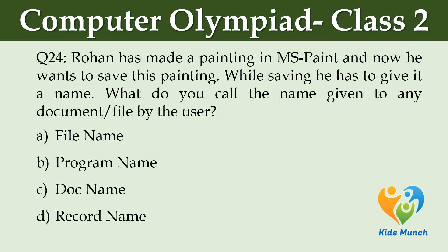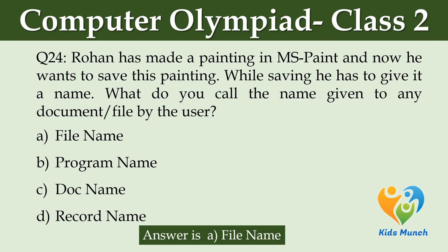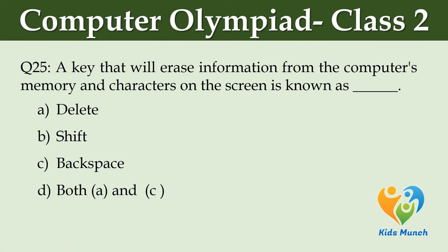Rohan has made a painting in MS Paint and now he wants to save this painting. While saving, he has to give it a name. What do you call the name given to any document or file by the user? Option A: File name. Option B: Program name. Option C: Doc name. Option D: Record name.